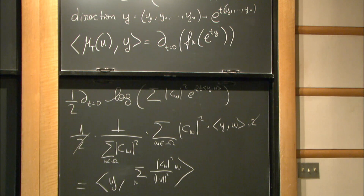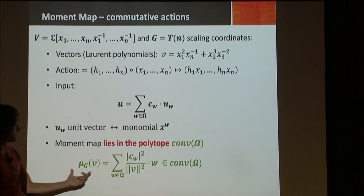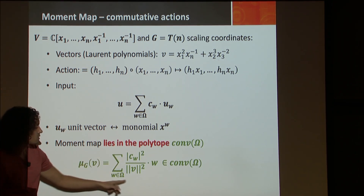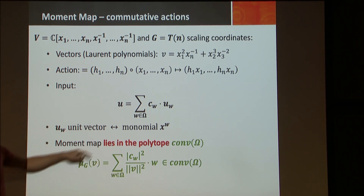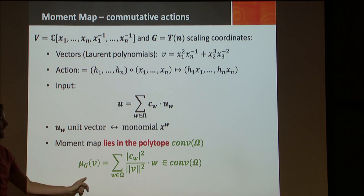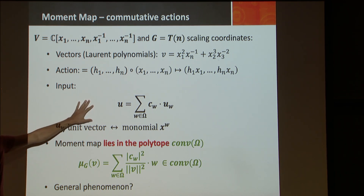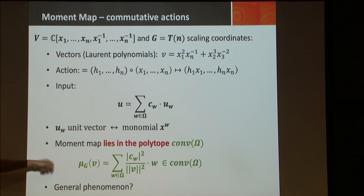Notice that the moment map at u is a convex combination of all the weights w, because summing all |c_w|^2 gives the norm squared. So the moment map lies in the convex hull of the exponent vectors. This polytope has a name: the Newton polytope. So the moment map lies in the Newton polytope of your polynomial — and this holds for every element in the orbit.